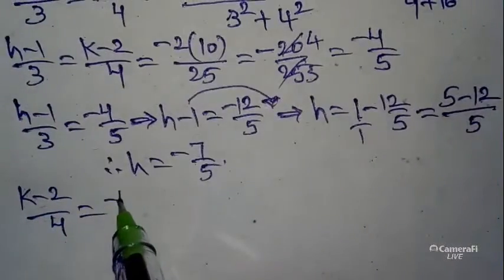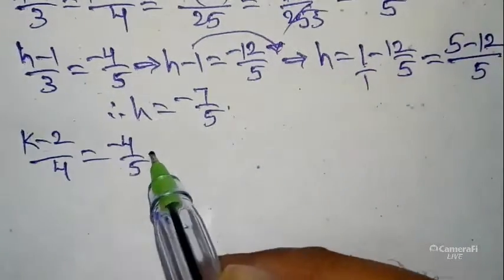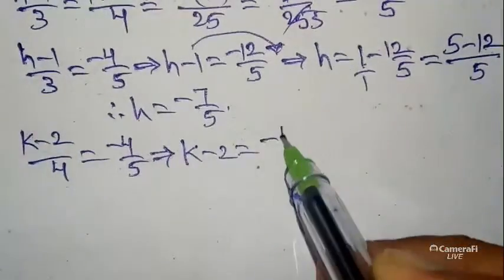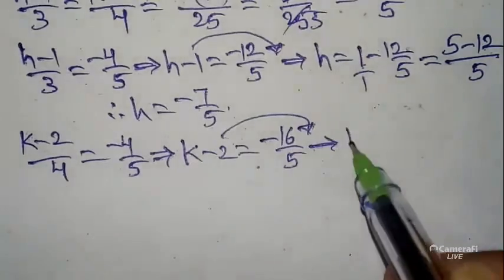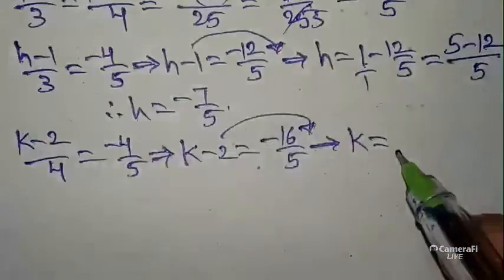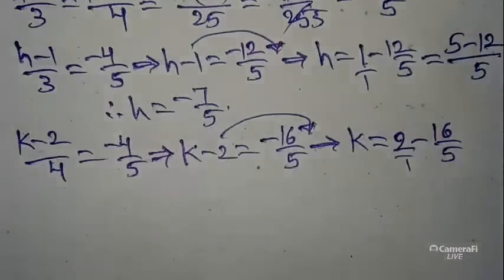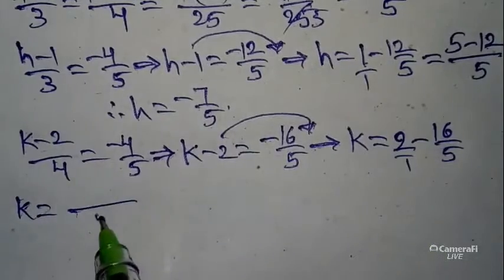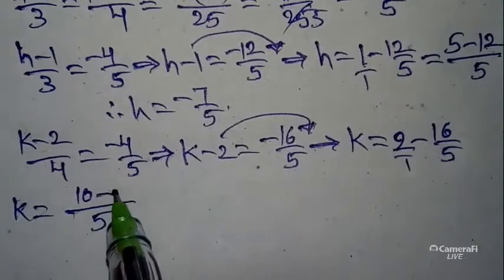Next to get k value: (k - 2)/4 = -4/5. Cross-multiplying: k - 2 = -16/5. Moving -2 to the other side: k = -16/5 + 2.